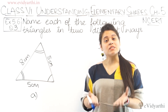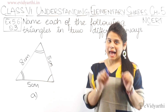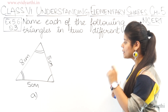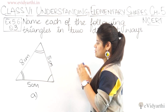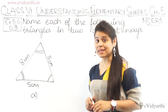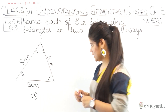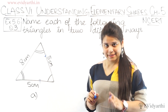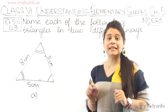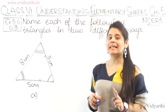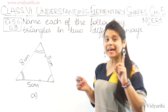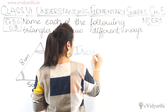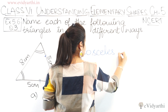First, let's look at the sides of the first triangle. The sides given are 8cm, 5cm, and 5cm. So this means two sides of 5cm are equal to each other. Since two sides are equal, this is an isosceles triangle.